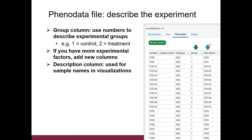The phenodata file is a very special file in Chipster because it's used for describing the experiment. You will have these columns there ready, but two of them will be empty. Particularly important is the group column — here you need to describe which samples belong to the control group and which were, for example, the treatment group. Rather than writing 'control' and 'treatment' here, we strongly encourage you to use numbers, with the smaller number always assigned to the control group. This is because the R-based tools after this are going to look at it, and for them it's easier to understand numbers.